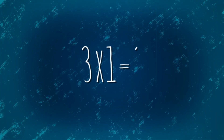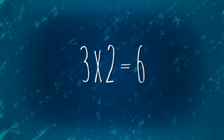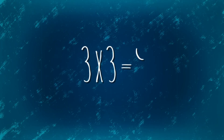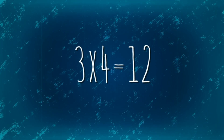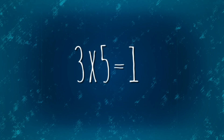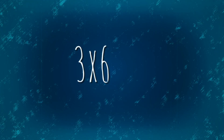Three times one is three. Three times two is six. Three times three is nine. Three times four is twelve. Three times five is fifteen. Three times six is eighteen.